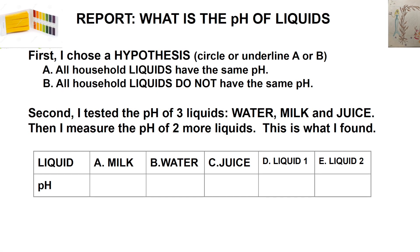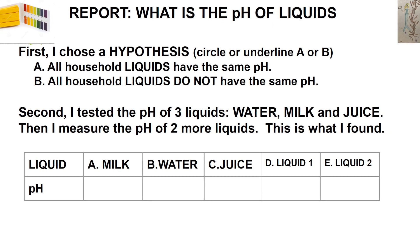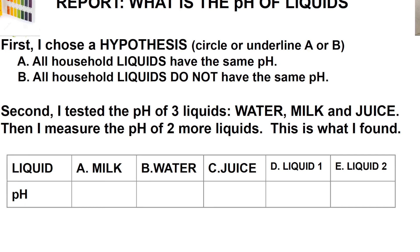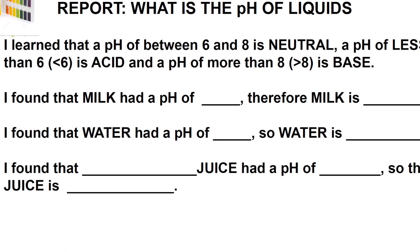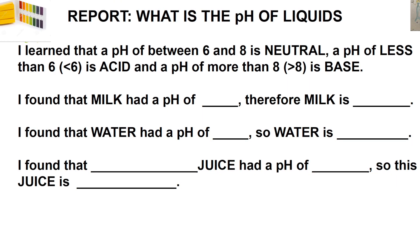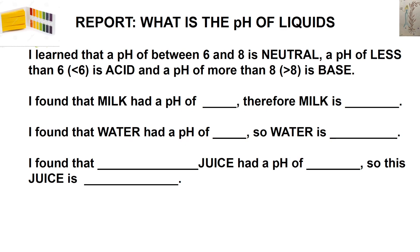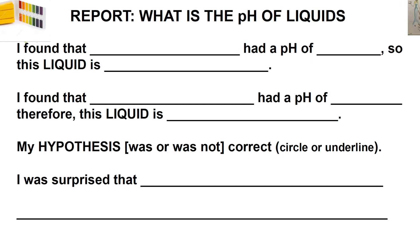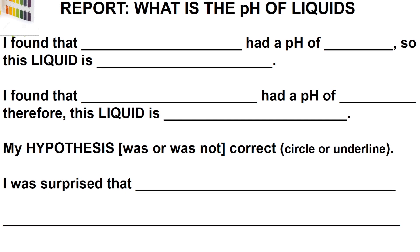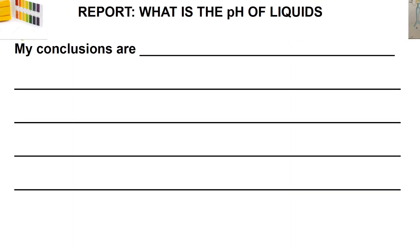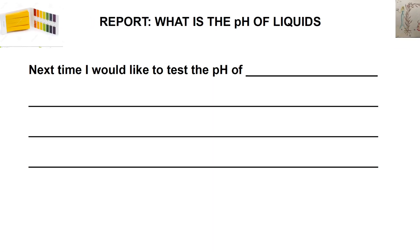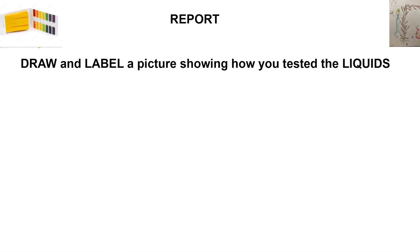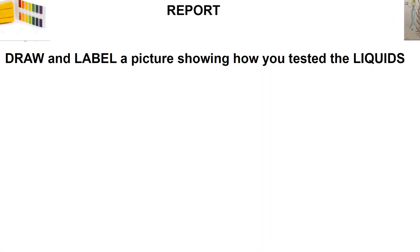In my lab book, I would circle hypothesis B — all household liquids do not have the same pH — then record the pH that I saw when I did my testing. I'll write my results and my conclusion: was the liquid an acid, a base, or neutral pH? Make sure to include whether your hypothesis was correct or not correct, and anything that might have surprised you. Write your conclusions on this page, and if there's anything that you'd like to test next time, write it here. Be sure to draw and label a picture showing how you tested the liquids that you chose.